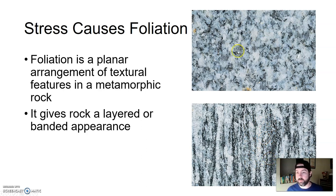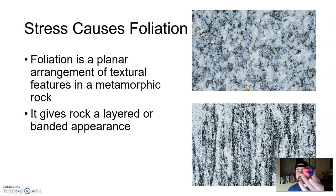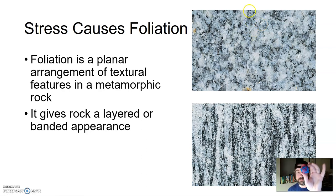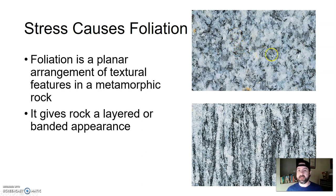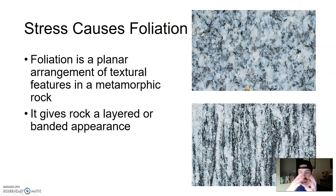Let's say we start off with what looks like a bunch of little mineral crystals — this looks like an igneous rock. Let's pretend this is an igneous rock made up of a bunch of different crystals of blue, purple, and pink minerals. What we see on the screen are white and black minerals, and when stress is applied — heat and pressure — these minerals will squish and elongate and form these kind of mineral bands.